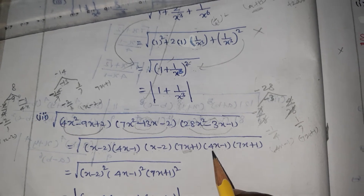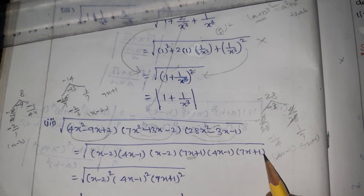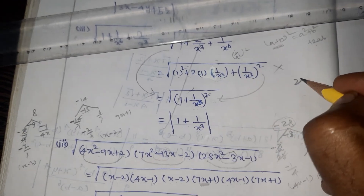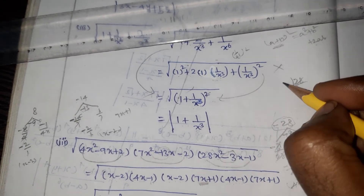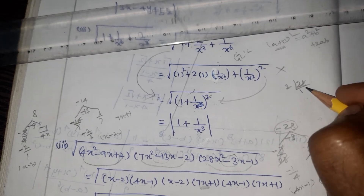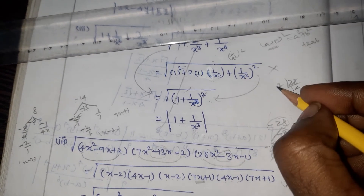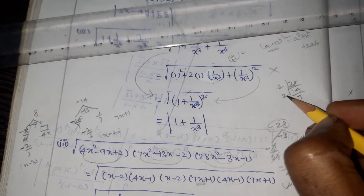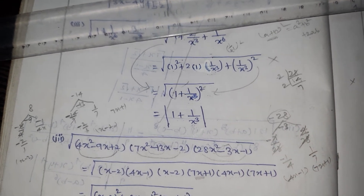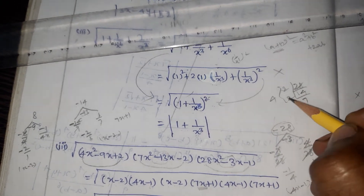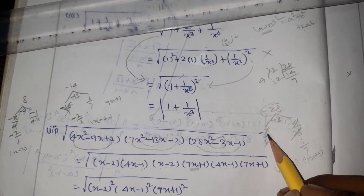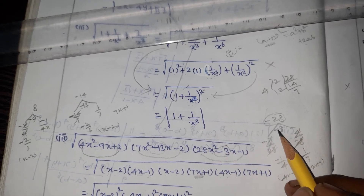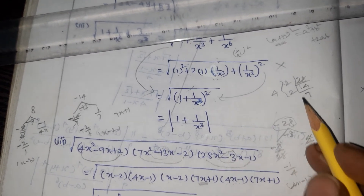The factors of 28x squared minus 3x minus 1 are 4x minus 1 and 7x plus 1. Using 7 fours are 28, the values work out so that the product is minus 28 and the sum is minus 3, confirming the factorization.